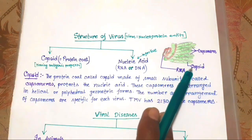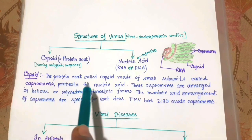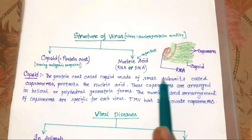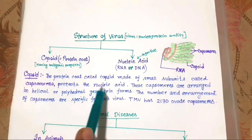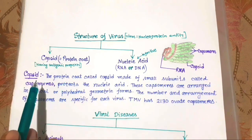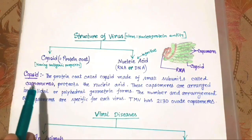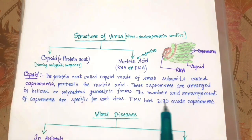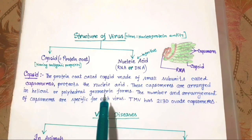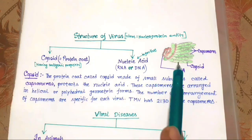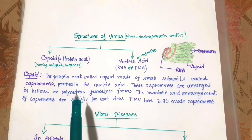The subunit of the capsid is called capsomers. The protein coat called capsid is made of small subunits called capsomers, which protect the nucleic acid. These capsomers are arranged in helical or polyhedral geometric forms. In the case of TMV, it is arranged in helical form, and polyhedral means a three-dimensional form.